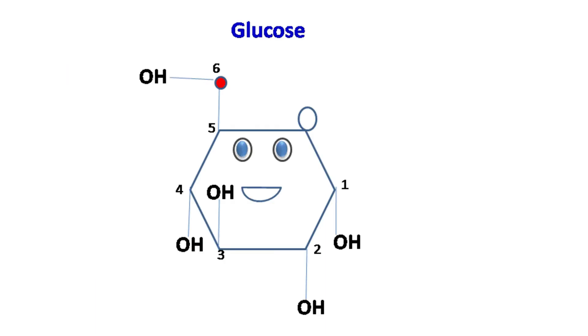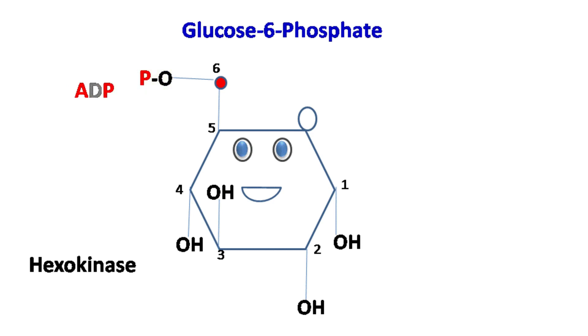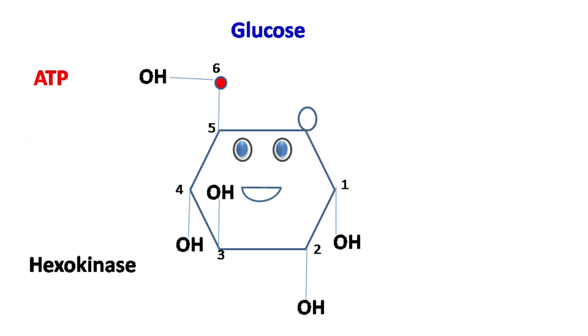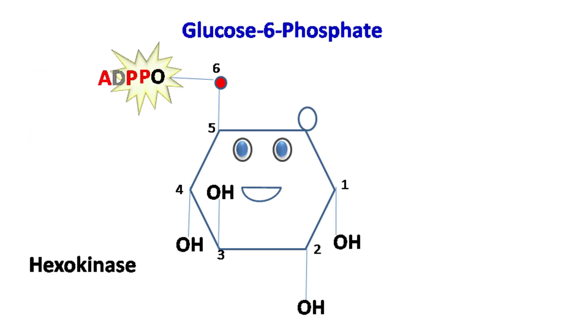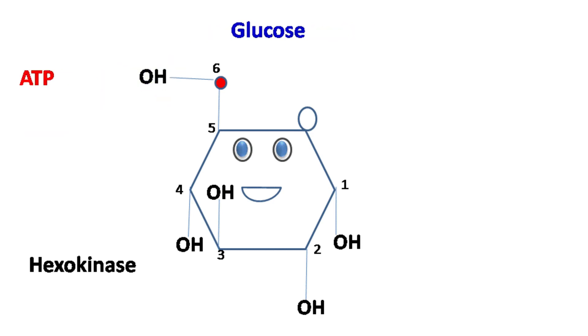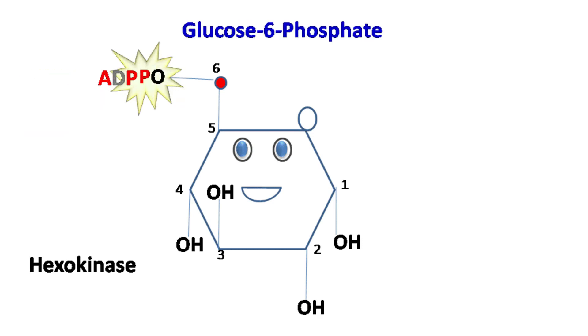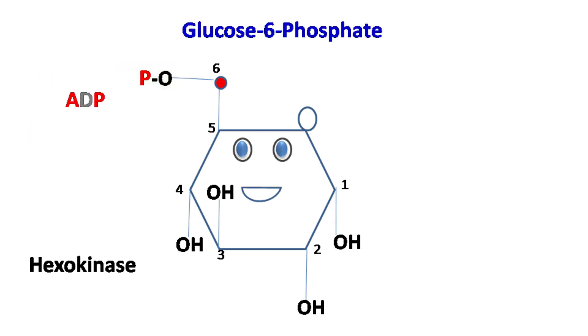The first step of glycolysis is the phosphorylation of glucose with ATP in presence of enzyme hexokinase to yield glucose-6-phosphate.